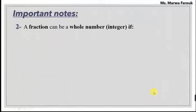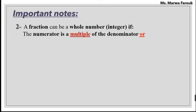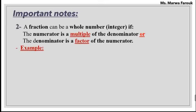Now let's move to another important note: a fraction can equal a whole number, or integer — integer is another name for the whole number. When can a fraction be a whole number? When the numerator is a multiple of the denominator, or the denominator is a factor of the numerator. For example, 81 over 9 — the numerator 81 is a multiple of 9, or 9 is a factor of 81. So we can write this fraction as a whole number: 81 divided by 9 equals 9.